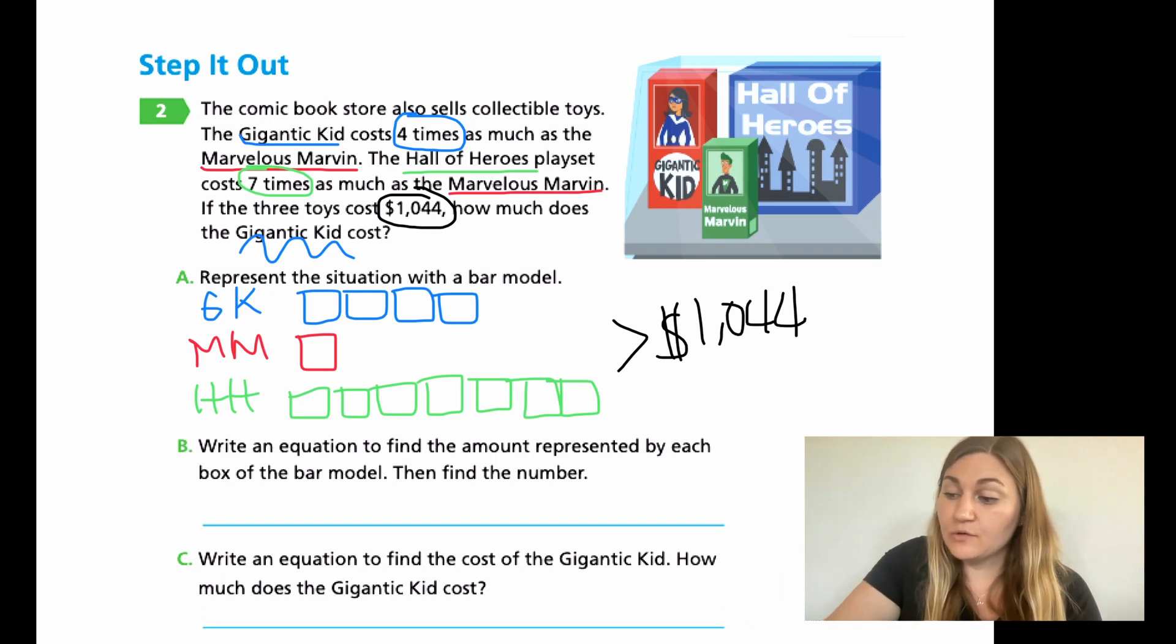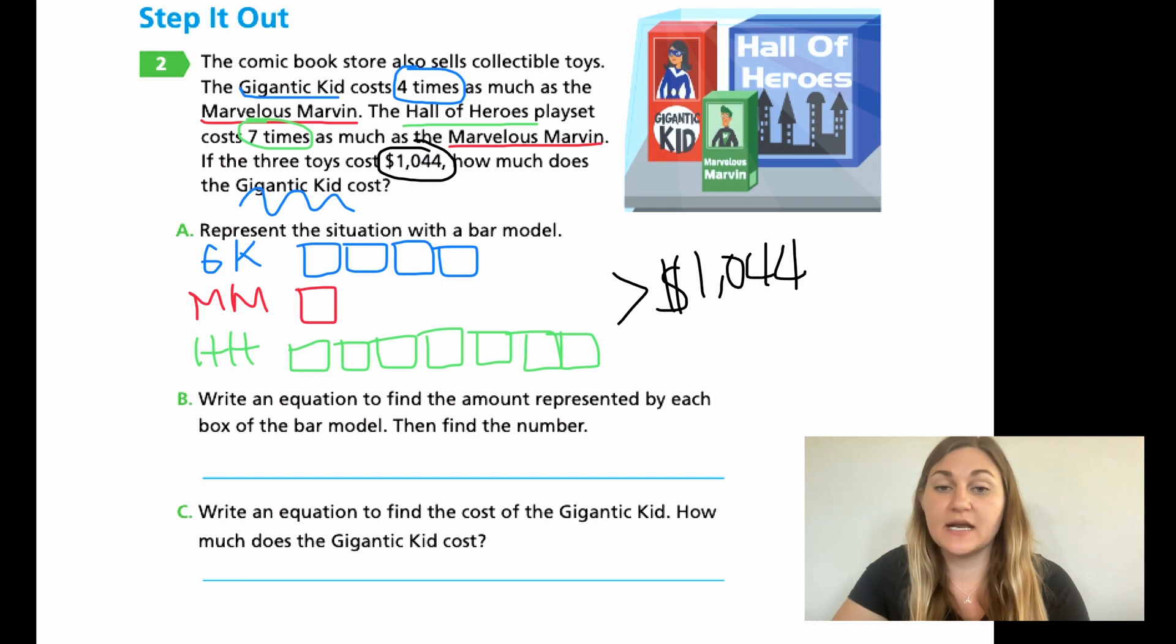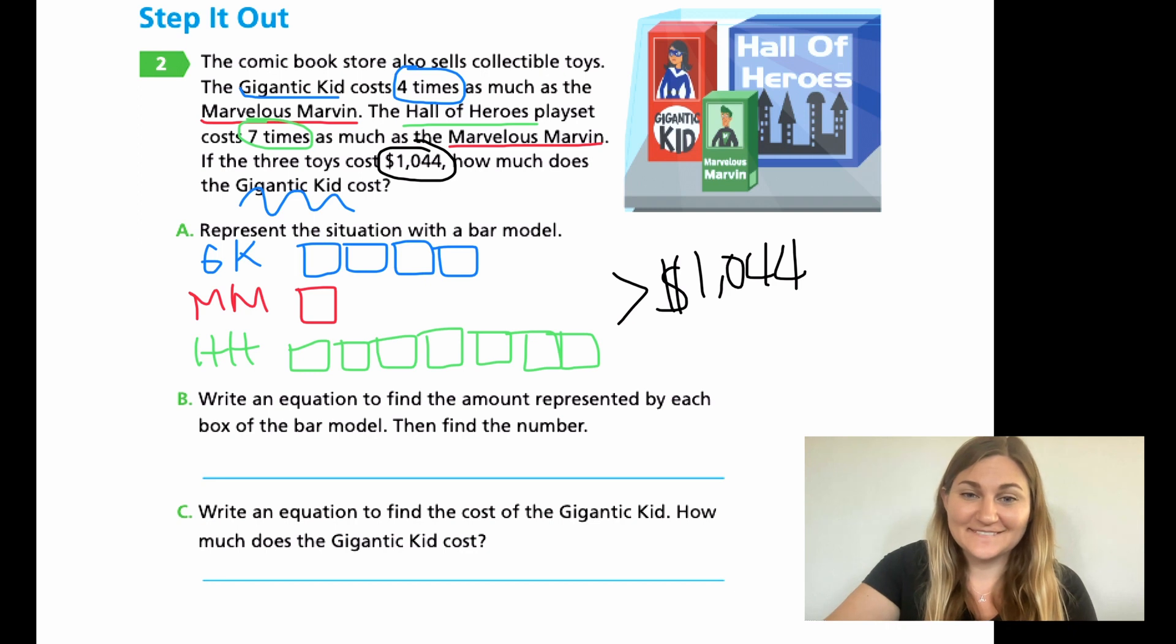Now it says, write an equation to find the amount represented by each box of the bar model. Now that we have our problem set up, here's where I want you to jump in and try this on your own. So I want you to try to find the equation for yourself and then solve it. So I want you to set up the equation, divide over to the side, find your quotient, find your answer of the division problem, and then move down to C and write an equation to find the cost of the gigantic kid. Because don't forget, that's what we're actually looking for. We're not just finding each box its value. We're trying to find out how much the gigantic kid costs. So I want you to do B and C, go ahead and hit pause here.